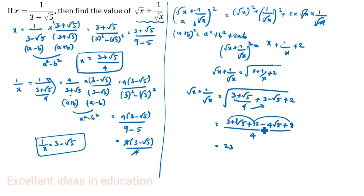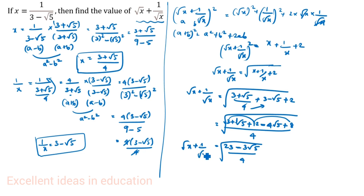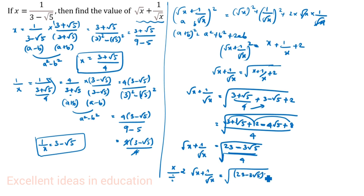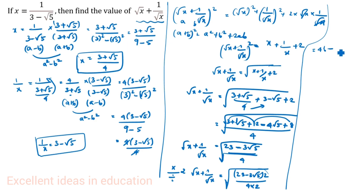We have 23, and for the root 5 terms: 1 root 5 minus 4 root 5. Since minus 4 is the bigger number, we get minus 3 root 5. So x plus 1 by x plus 2 equals (23 minus 3 root 5) by 4. To remove the outer root, we multiply and divide by 2, giving root of (23 minus 3 root 5) times 2 divided by 4 times 2, which is root of (46 minus 6 root 5) divided by 8.